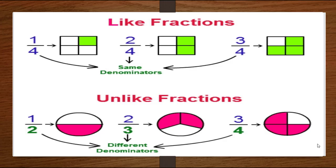Fractions that have the same denominators are called like fractions. Next we will discuss unlike fractions. There are three circles. The first circle is divided into two parts and one part is shaded, so the fraction is 1 over 2. In the second circle divided into three parts, two parts are shaded, so the fraction is 2 over 3. In the third circle divided into four parts, three parts are shaded, so the fraction is 3 over 4. In all three fractions, denominators are different — 2, 3, and 4. Fractions with different denominators are called unlike fractions.